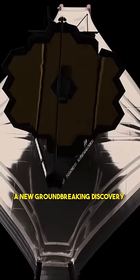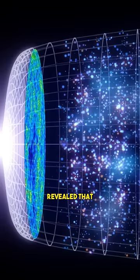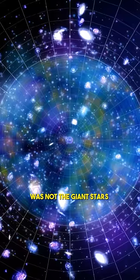A new groundbreaking discovery from NASA's James Webb Space Telescope revealed that the most powerful source of light in the early universe was not the giant stars or massive galaxies,